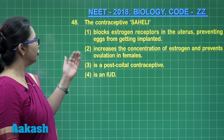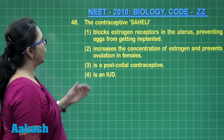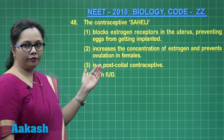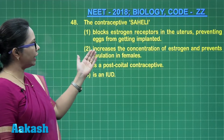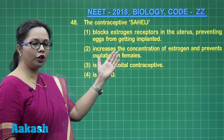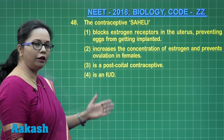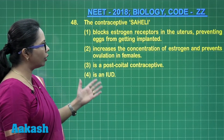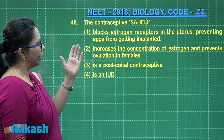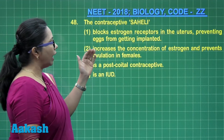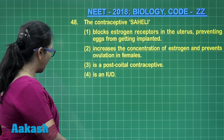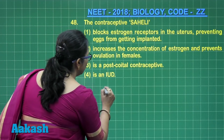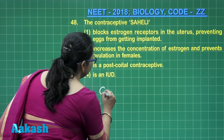Moving on to question 48, the contraceptive Saheli. Saheli is a once-a-week contraceptive pill which was developed by CDRI Lucknow. This pill has a chemical in it which is called centchromin.